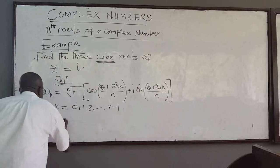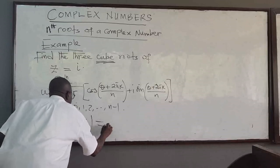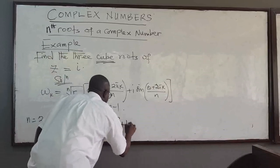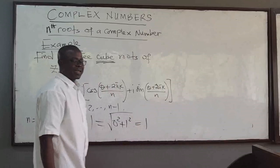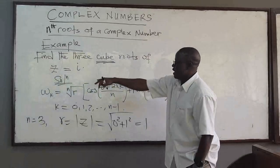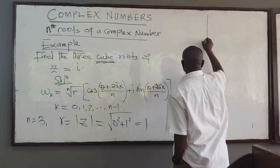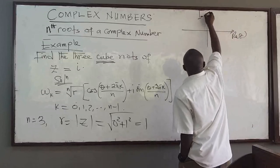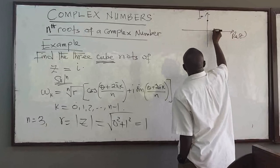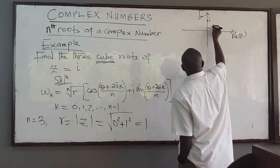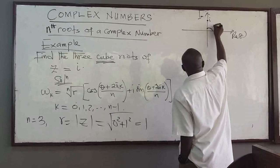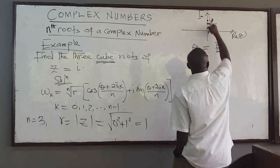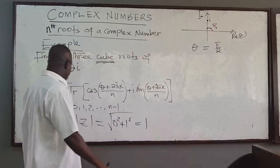We know that r is the modulus of z, that is the square root of the real part squared plus the imaginary part squared. The real part is 0, so it's 0 squared plus 1 squared, which equals 1. For theta, since z equals i on the complex plane, i lies on the imaginary axis, so the angle is 90 degrees, that is pi over 2. So theta equals pi over 2.